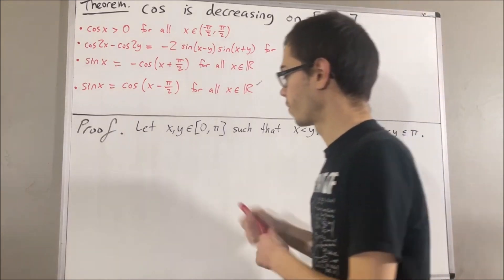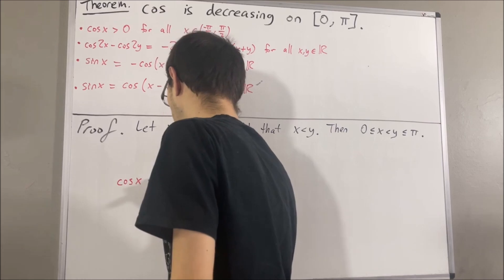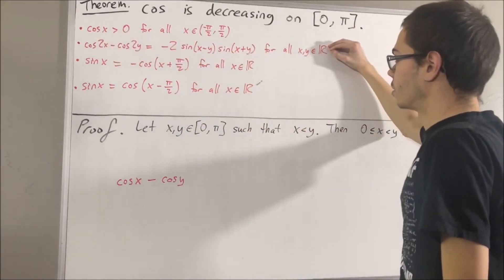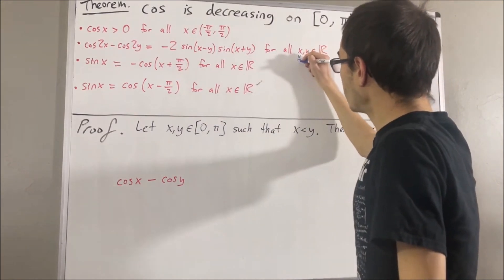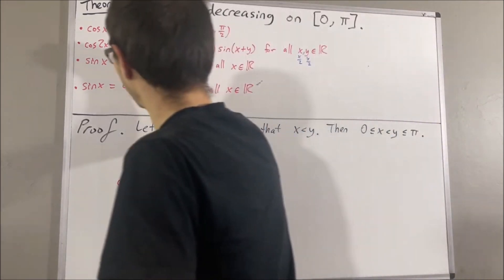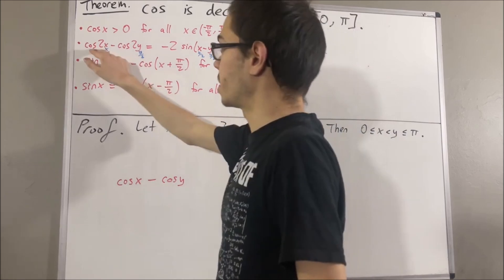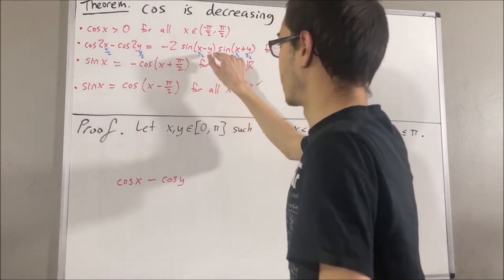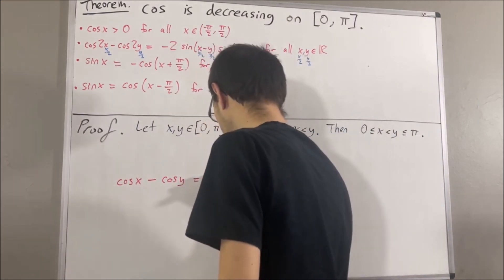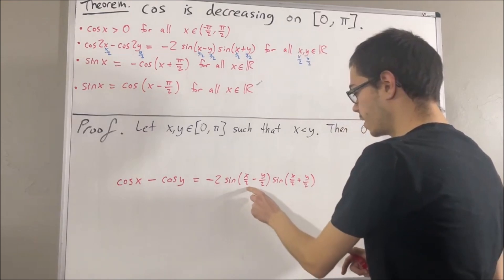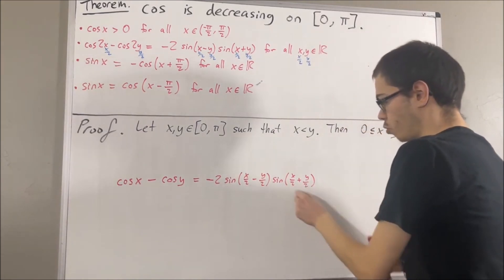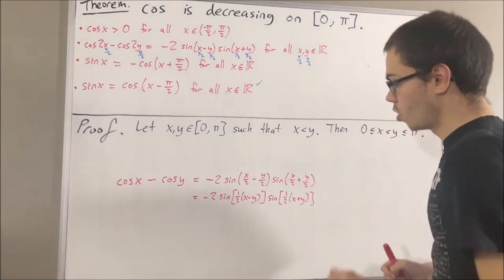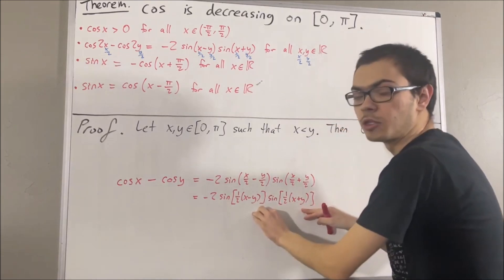To show that, consider what happens if we compute cosine of x minus cosine of y. We are going to apply the second preliminary result, taking x to be x over 2 and y to be y over 2. In that case, cosine of x minus cosine of y equals negative 2 sine of (x over 2 minus y over 2) times sine of (x over 2 plus y over 2). Inside each parenthesis, we factor out one half.